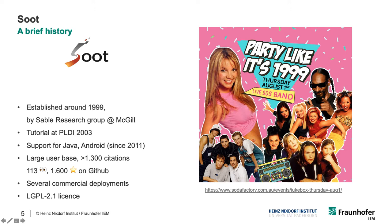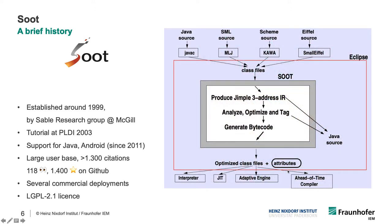Back then, Soot was mainly used for ahead-of-time optimization. The idea was that you would read class files from different sources — back then from languages such as Java and Small Eiffel — into the Jimple intermediate representation, which is Soot's primary IR. You would then optimize the code, generate bytecode from it, and execute it using a number of different options.